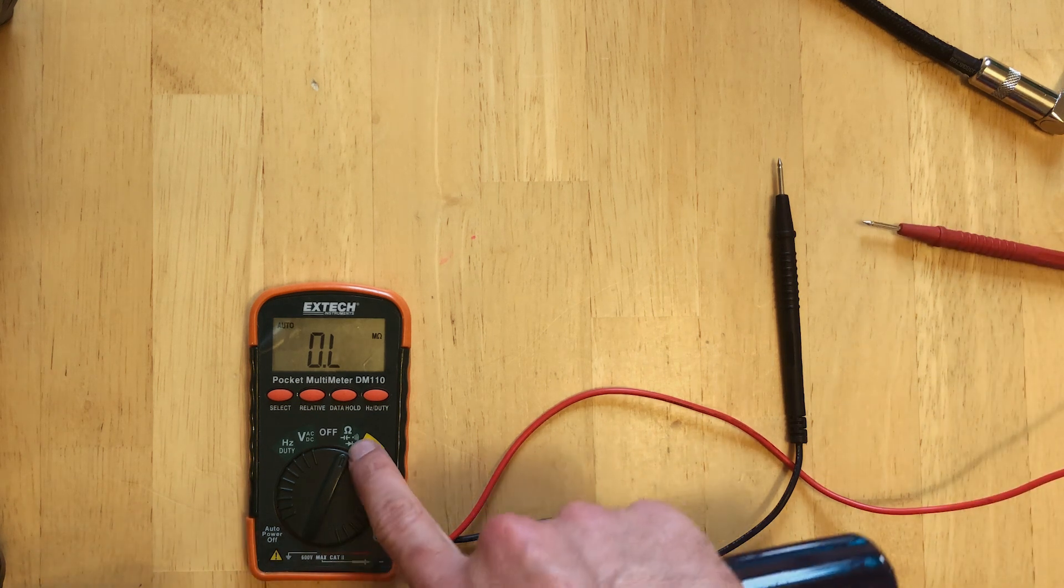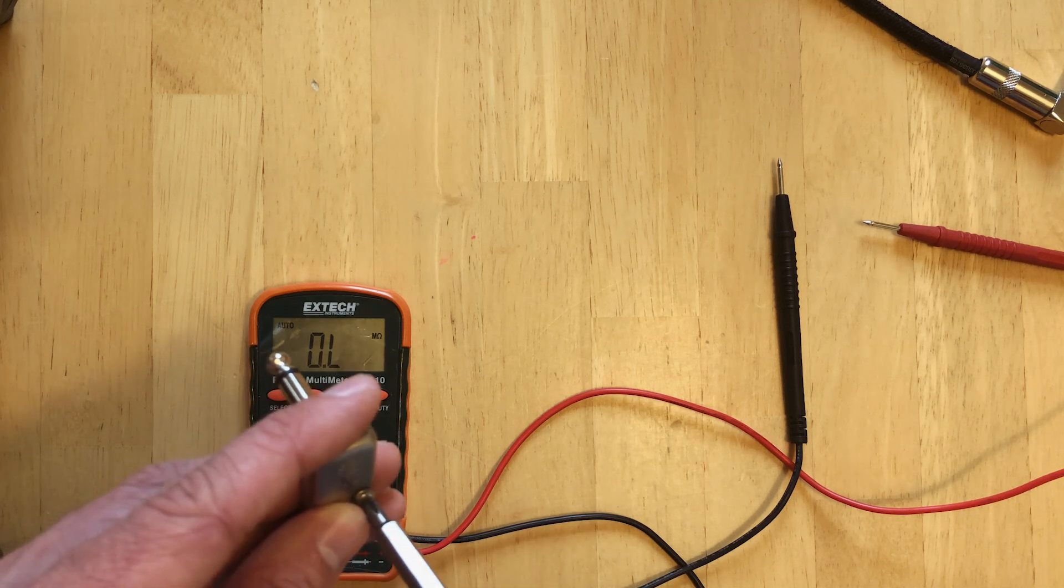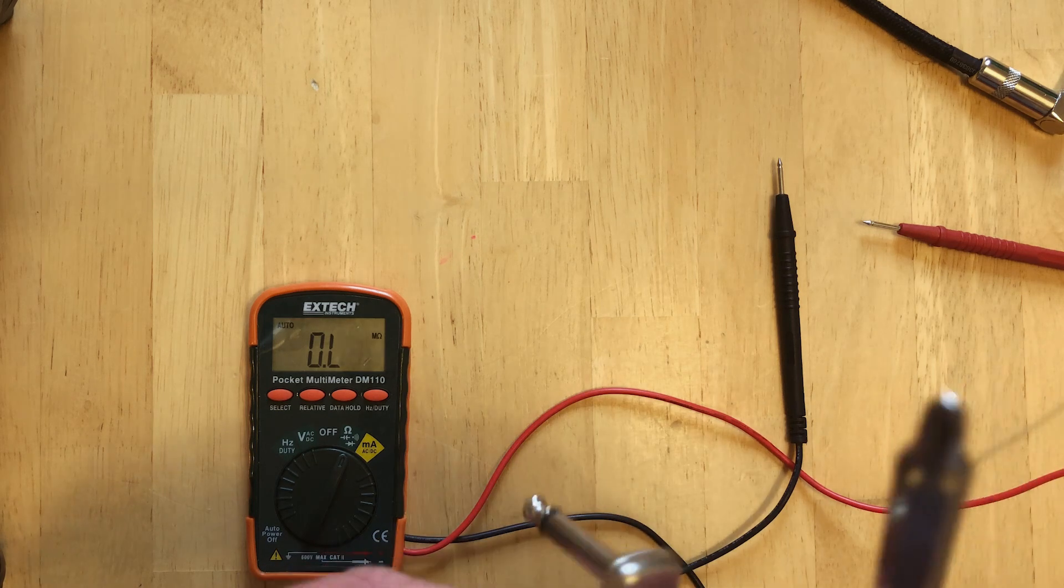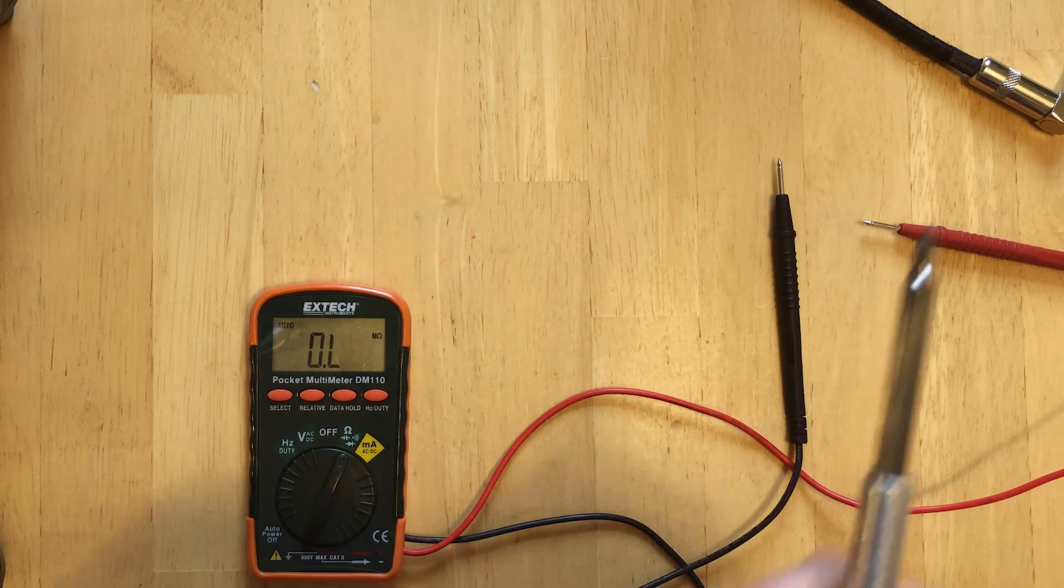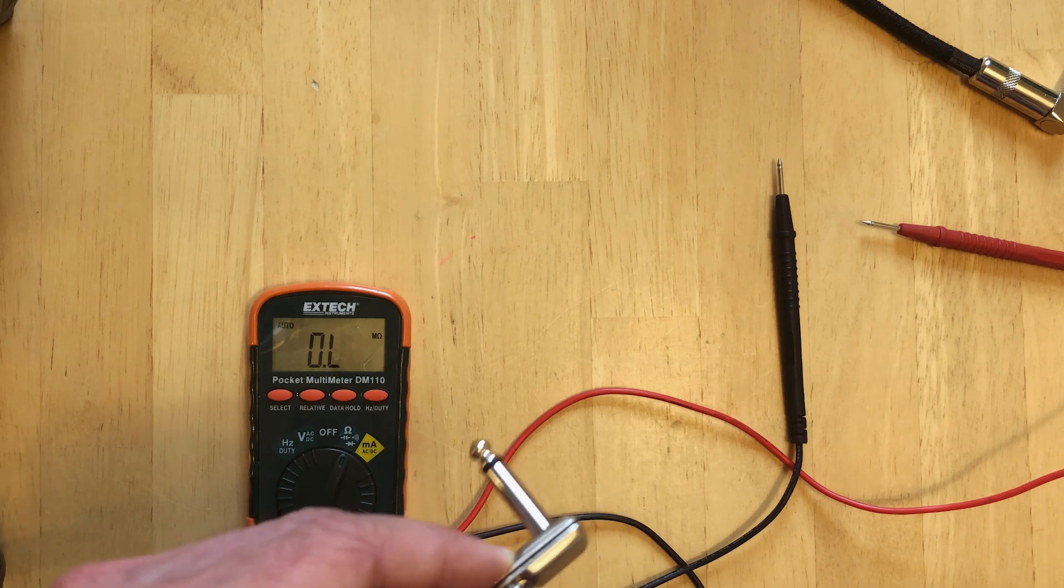And so yeah, super simple, super easy. You just set it on the ohm setting on your multimeter and test for those three connections. If you have a stereo plug that you're testing, you test all three—you test the tip, ring, and the sleeve. Anyway, I hope this video has been helpful to you guys, and I'll catch you later.